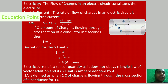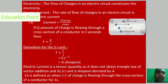Suppose we have a cross-section of a conductor. If Q amount of charges are flowing through that cross-section, and Q amount of charges flow in T seconds, then the electric current is I equals Q upon T.